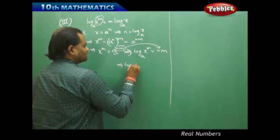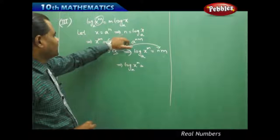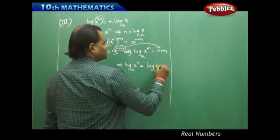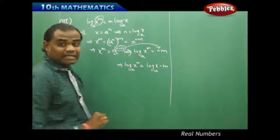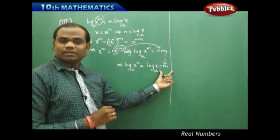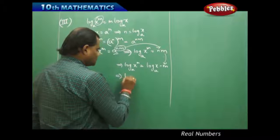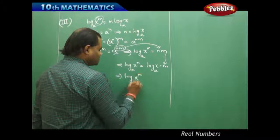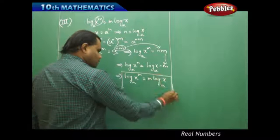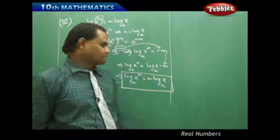Now this in turn, when substituted, gives me that log x^m to base a equals nm. What is n? I have n as log x to the base a, times m, which remains as it is since I have no value for m. I just take m as is in the next step. When rearranged, this gives me log x^m to base a equals m log x to the base a, thus proving the third law of logarithm.